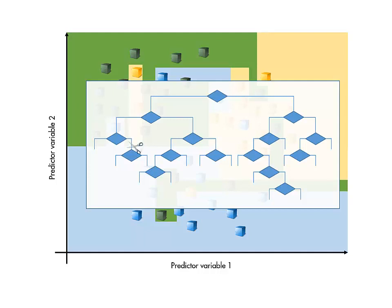You can prune a tree, that is, reduce the number of splits, to create a simpler model that may have a higher resubstitution loss, but better generalization to new data.